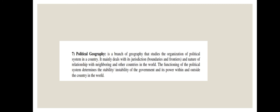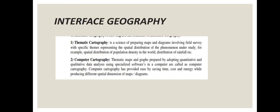Now the last branch of geography is interface geography. Thematic cartography is the science of preparing maps and diagrams involving field survey. For example, if we want to discuss the distribution of population at a certain area, we make a map or diagram so that everything can be seen clearly — where the people are, where areas are located. The complete description of an area shown as maps and diagrams is thematic cartography.